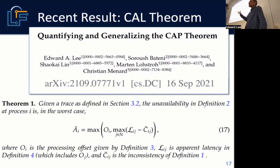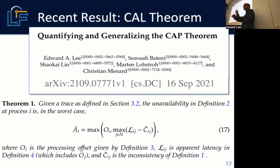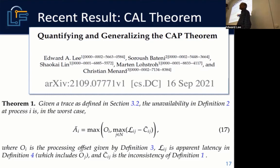In the remaining time I'm going to give you a very quick sketch of how we derive this theorem, which is an algebraic relationship between unavailability, inconsistency, and apparent latency in the network — where apparent latency is a measurable quantity. It turns out to be a beautiful relation that is linear in an alternative algebra called the max-plus algebra.